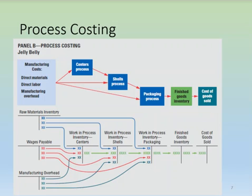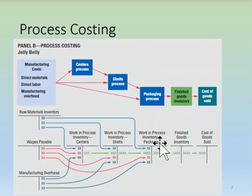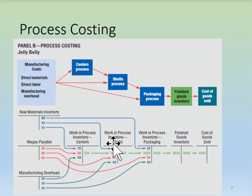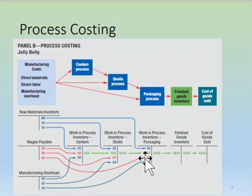Under process costing, instead of tracking costs by individual jobs, we track costs by processes. The process steps must be identifiable, so there are separate work in process accounts for each process. Using the jelly belly example with three processes, we have individual work in process accounts for each step. As each process is completed — for example, completing the centers — those costs are moved into the next process, where additional costs are added. Manufacturing costs assigned to the product must always follow the physical movement of the product. When units are physically transferred out of one process and into the next, the costs assigned to those units must also be transferred out of the appropriate work in process account and into the next.